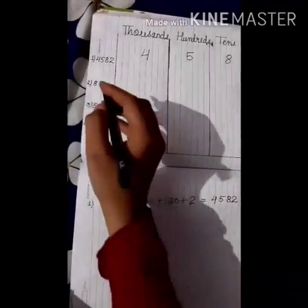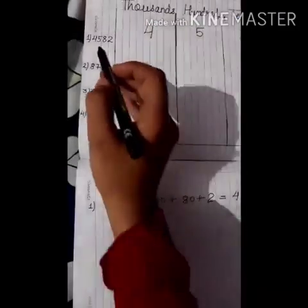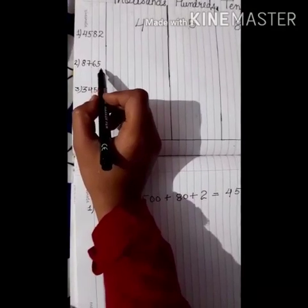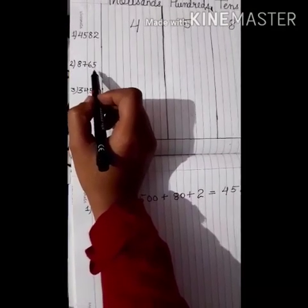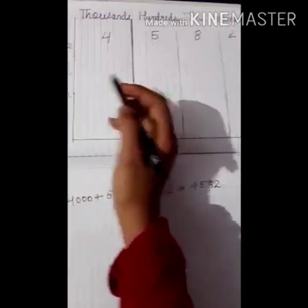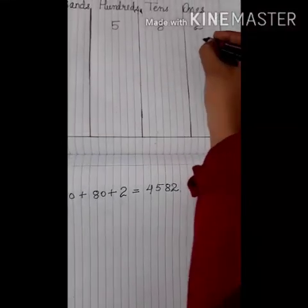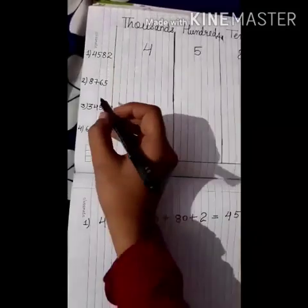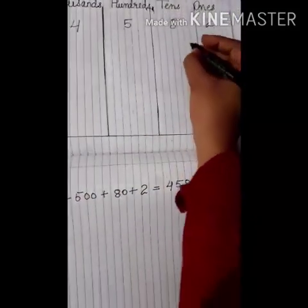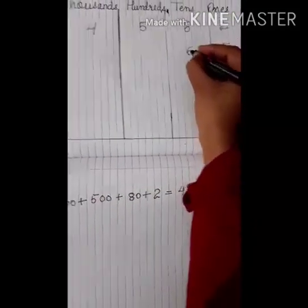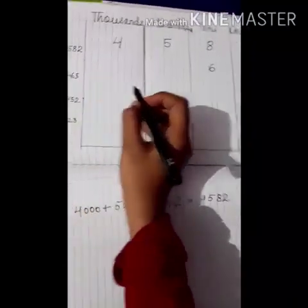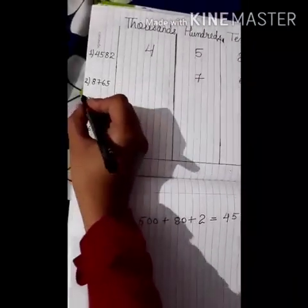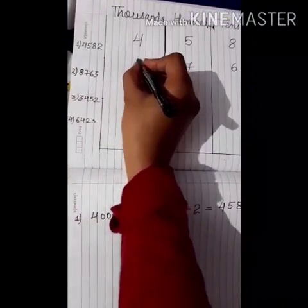Now we will take our next number. Our next number is 8, 7, 6, 5. Again we will start from the last number. The last number 5 is on the 1's place. 6 is on the 10's place. 7 is on the 100's place. And 8 is on the 1000's place.